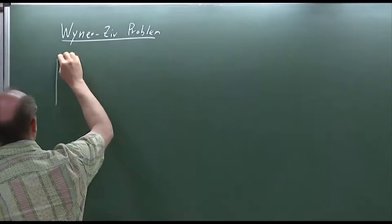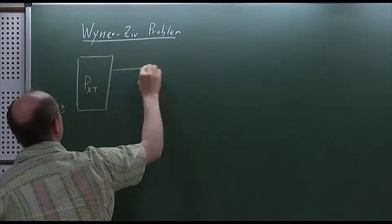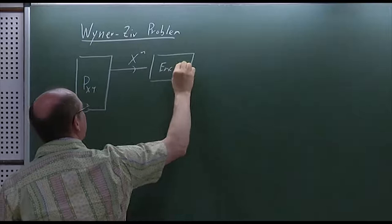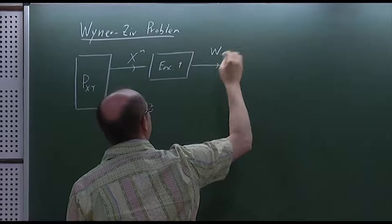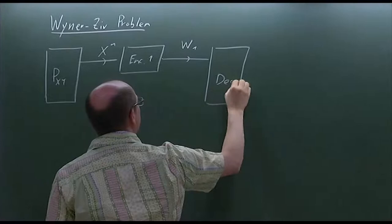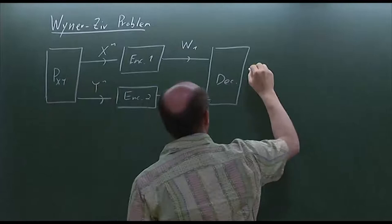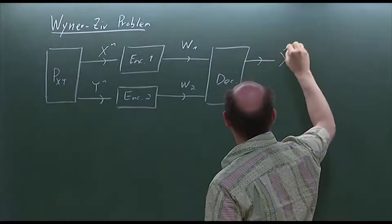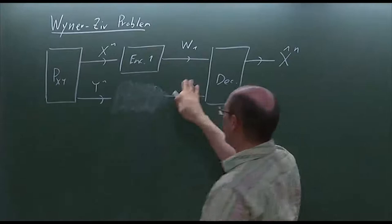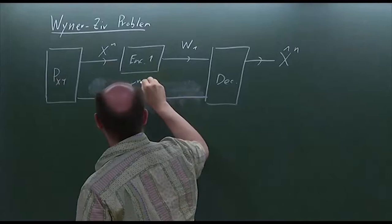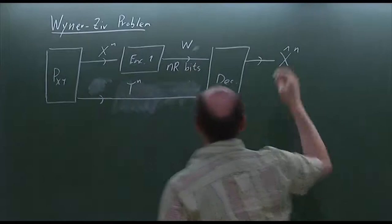Let's look at the setup. It's basically very similar to the problem we just studied. Here we have encoder one and we have W1, and then we have a decoder. Suppose now, instead of the problem where we're trying to recover x-hat-n and y-hat-n, suppose the rate here is at least the entropy of y. So effectively we have this problem, and I can get rid of this one and we'll get nR bits.